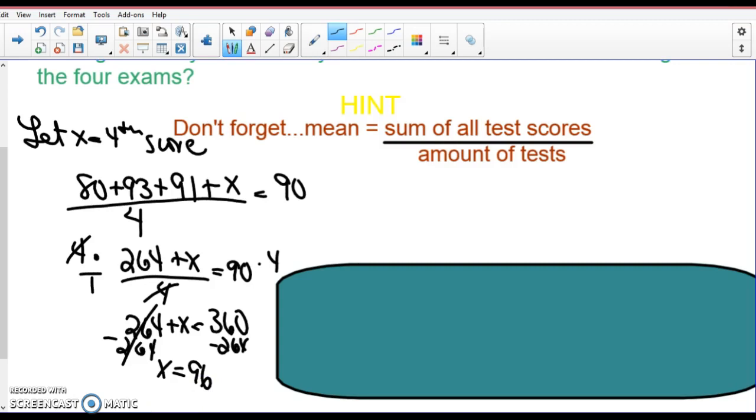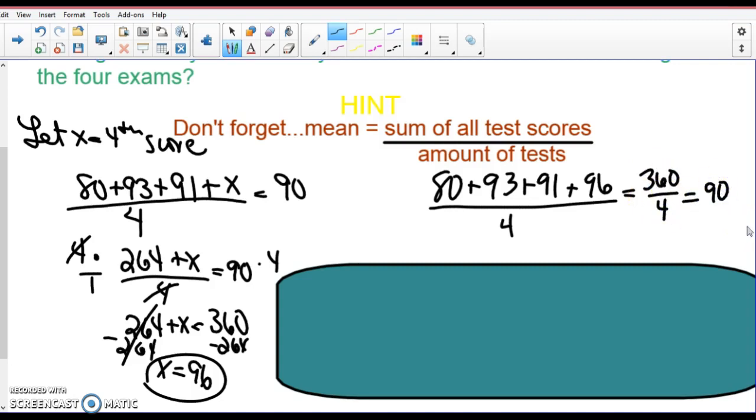And I end up with a test score of 96. So I need to get a 96 on that fourth test to have an average of 90. How can I check my work? Let's find the average. If my four tests are 80 plus 93 plus 91 plus 96, see what you get when you divide that by four. If you add those up, you will get 360. Yeah, that will be your 90 average.